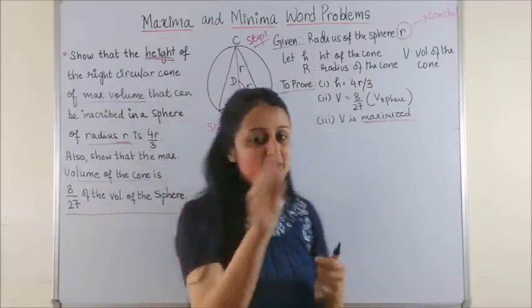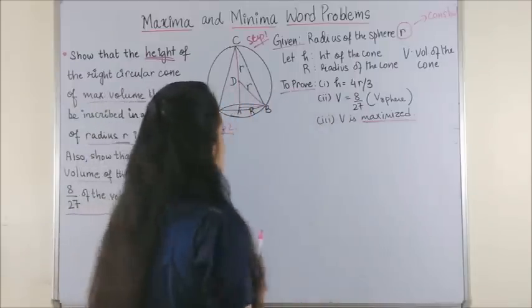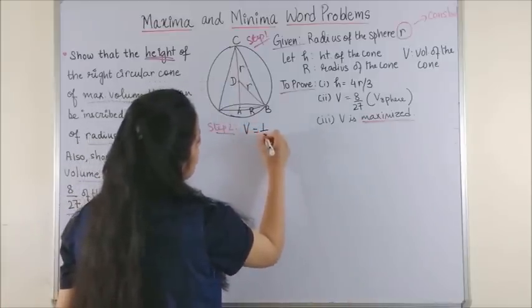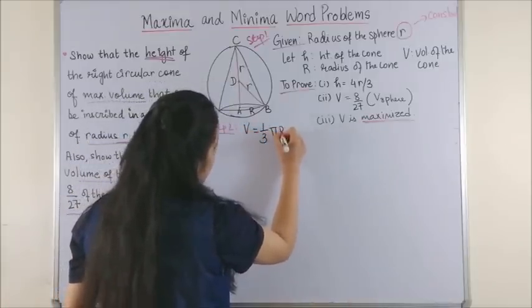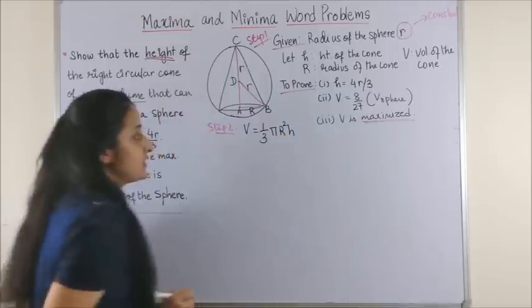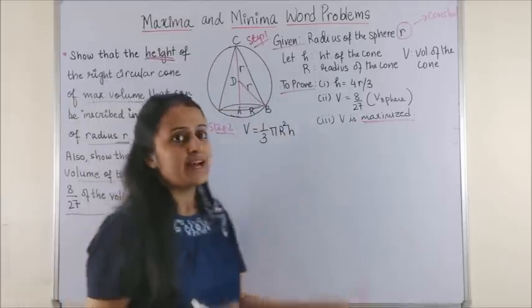Step number 2 is the kickstart formula. Begin with the formula of what has to be maximized or minimized. Like here, volume of the cone has to be maximized, so you know the formula: 1 by 3 pi capital R square into H.